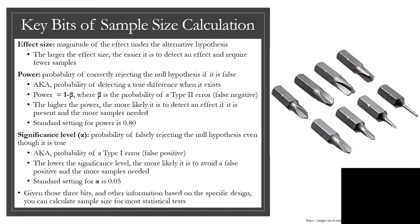Power, which is the probability of detecting a true difference when it exists. It's also one minus beta, which is a probability of false negative. The higher the power, the more likely it is to detect the effect if it's present, and the more samples needed.